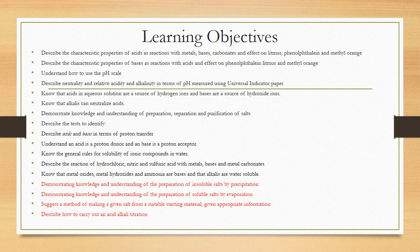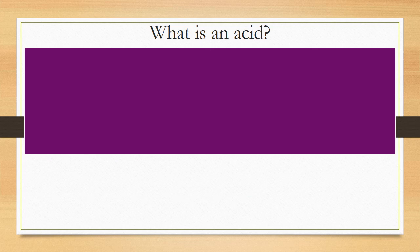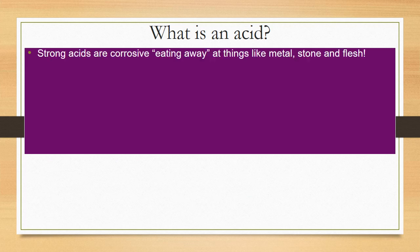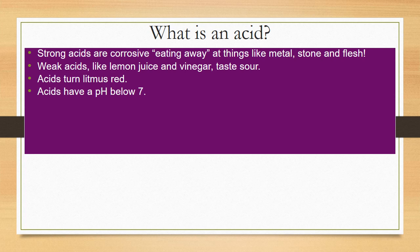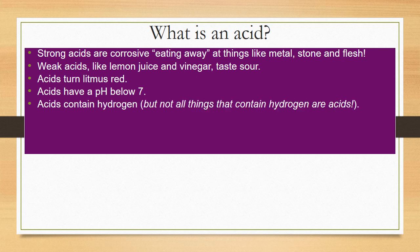First things first — what is an acid? Strong acids are corrosive; they eat away at things like metal, stone, and your flesh. That's why we need to be safe when using them. Weak acids like lemon juice and vinegar also taste sour. Acids turn litmus red and have a pH below 7. Acids contain the element hydrogen, though not all things containing hydrogen are acids.